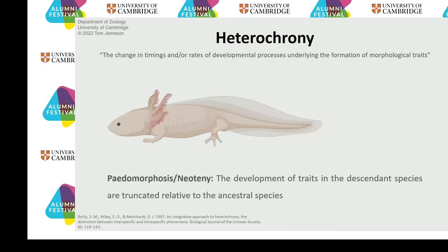This gives us a clue into the evolution of these small species. What we think is going on is a process called heterochrony — through evolution, a changing in the timing and/or rate of developmental processes underlying the formation of morphological traits. Specifically, we're looking at paedomorphosis or neoteny, where the development of traits in the descendant species are truncated relative to the ancestral species. Our descendant species look like juveniles of their ancestors. The axolotl is a familiar example — an adult salamander from Mexico that retains larval external feathery gills and a big swimming tail. That's probably what we think goes on with our tiny frogs as well.